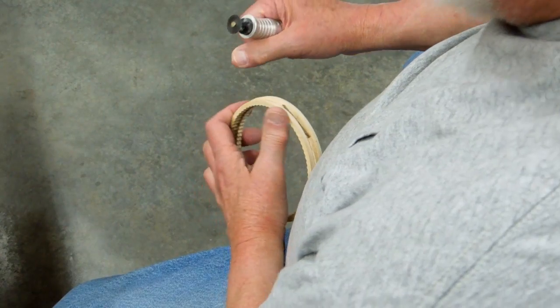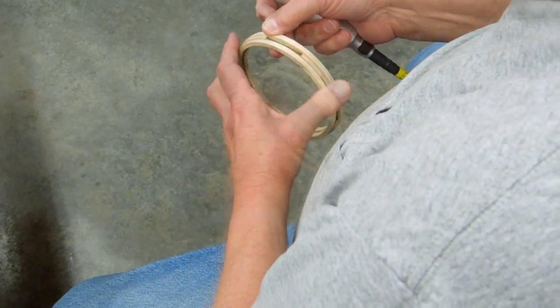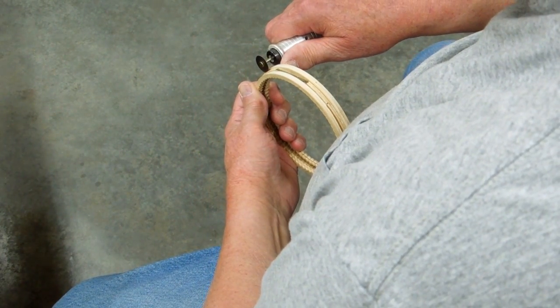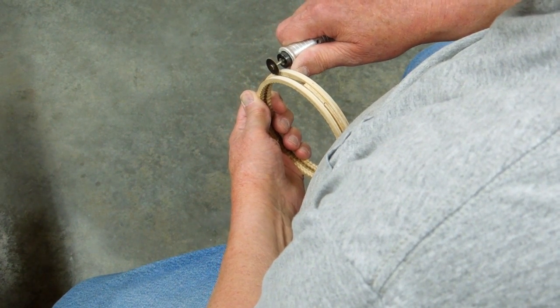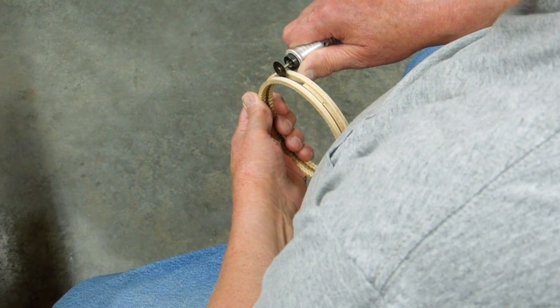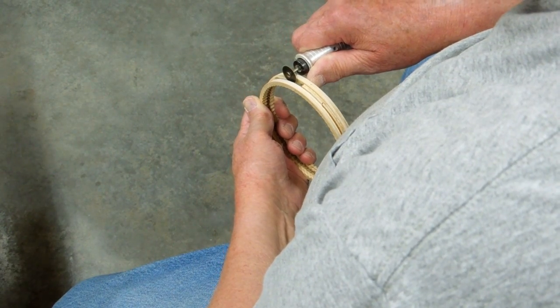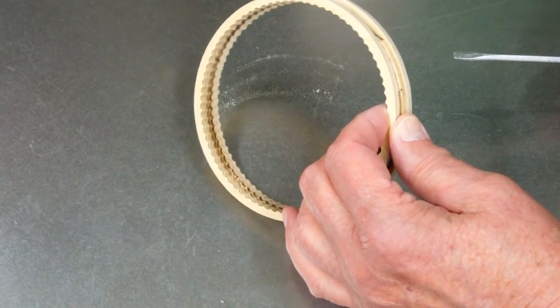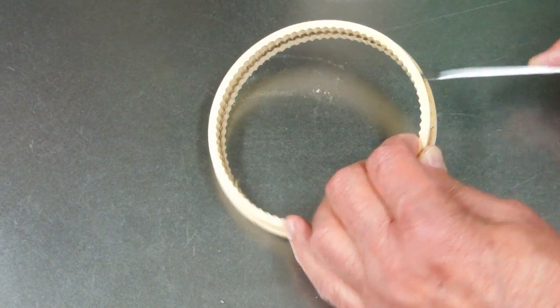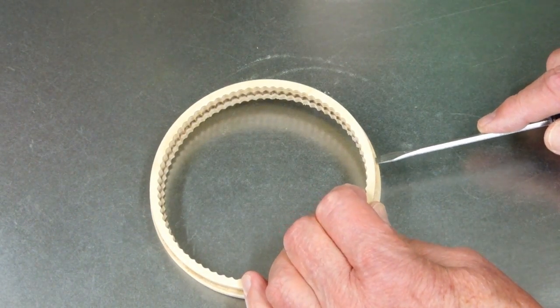These small saw blades are relatively dangerous. Using that slitting saw is not the safest thing in the world, but it does provide a solution.